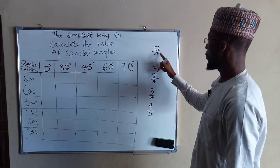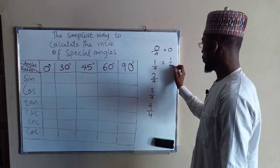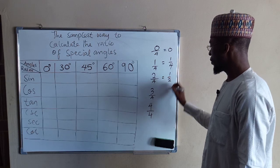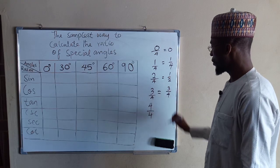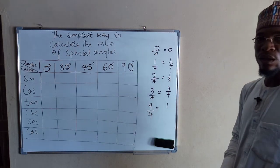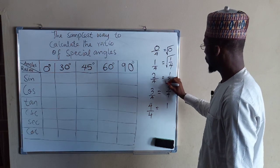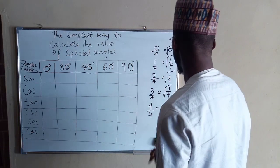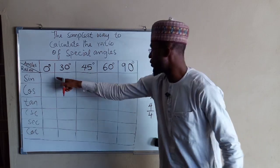0 divided by 4 is always equal to 0. 1 divided by 4 is 1 over 4. 2 divided by 4 is equal to 1 over 2. 3 divided by 4 is equal to 3 over 4. And lastly, 4 divided by 4 is equal to 1. Then secondly, you take the square root of each of these numbers in ascending order from 0 to 90 degrees.